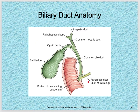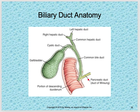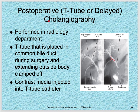So the biliary duct anatomy — this diagram should look very familiar. Just refresh your memory on this: the pancreatic duct of Wirsung, the ampulla, the sphincter. Make sure that you know where those are located and what they're called.